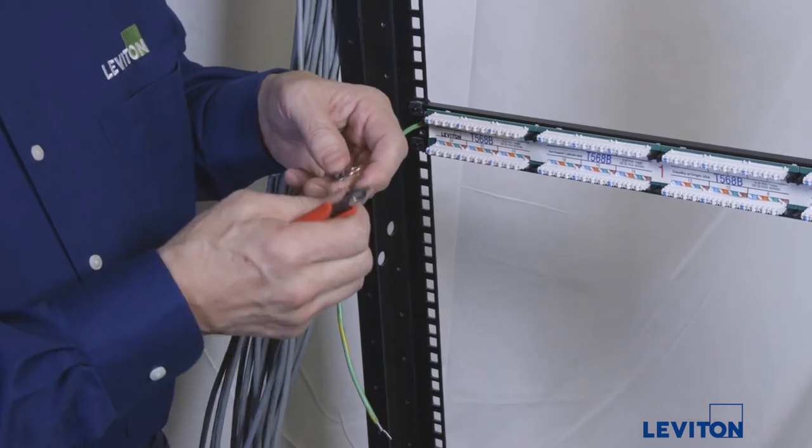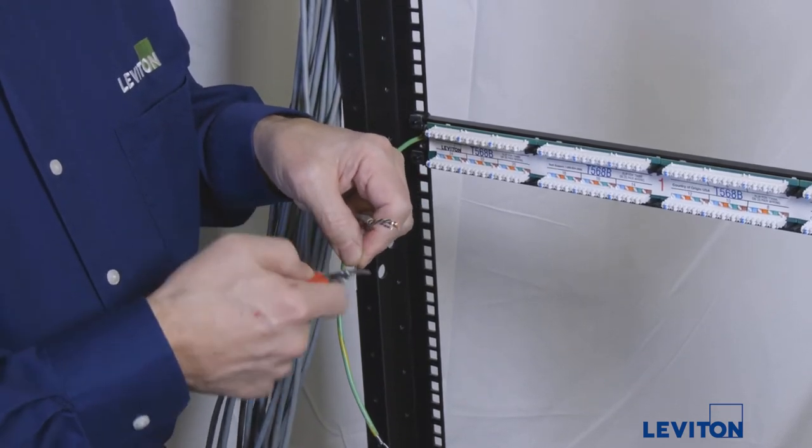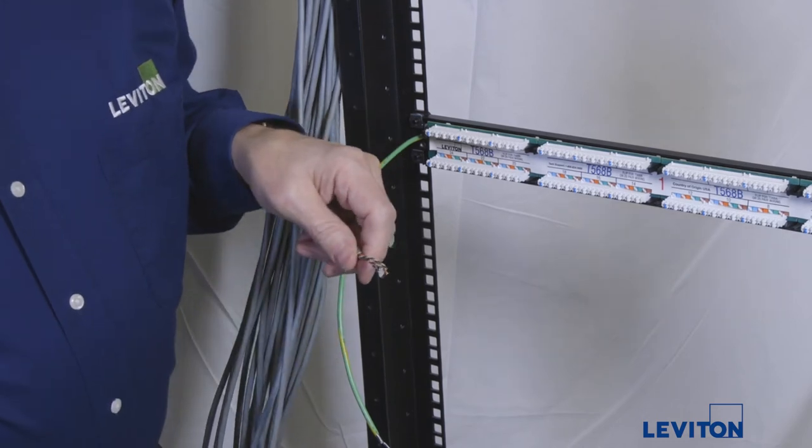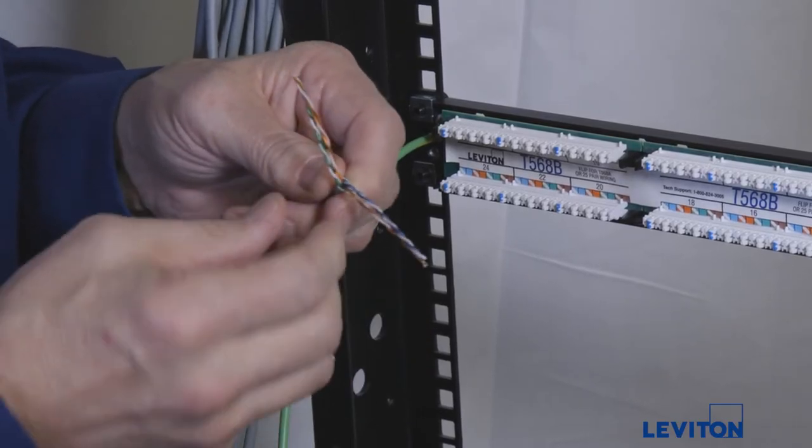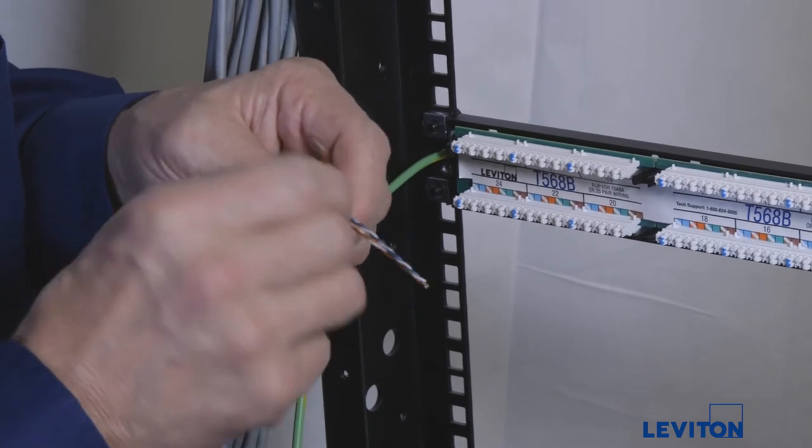This generic cat six cable contains a rip string which must be cut out. If the cable also includes a cross separator pull the pairs back, cut the cross separator and examine the pairs to make sure there's no damage to the wires.